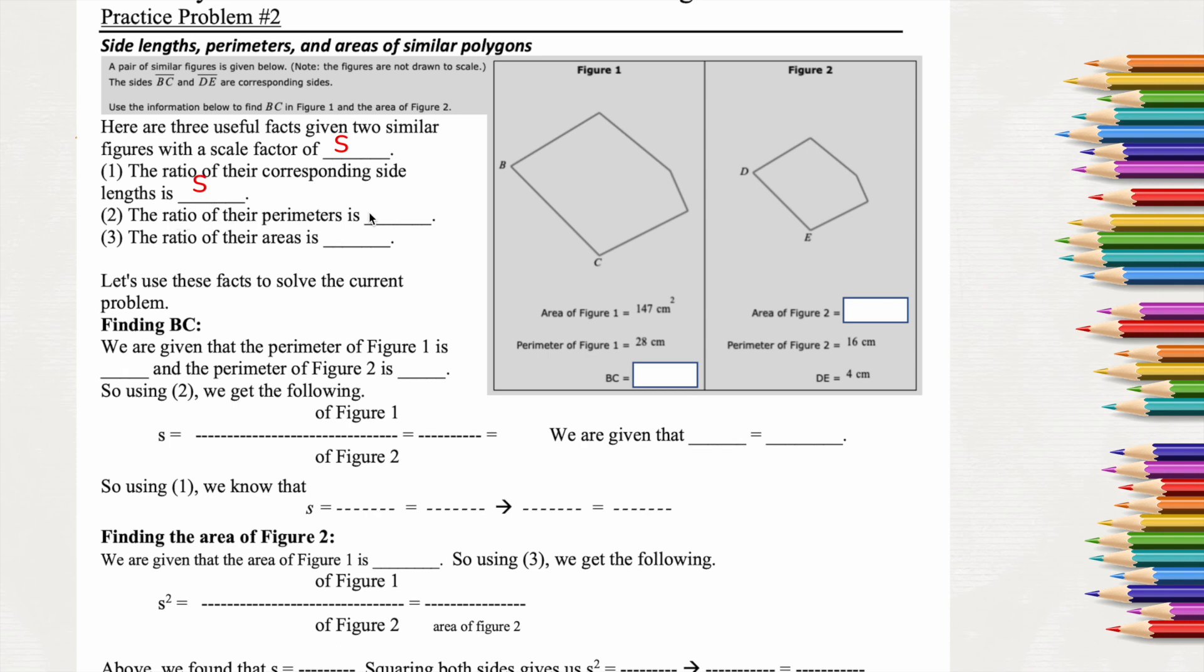If we're looking at the perimeter, the scale factor is still going to be S, whatever we calculated for the original scale factor. If it's the area that they're asking us to look at, then we have to square the scale factor.